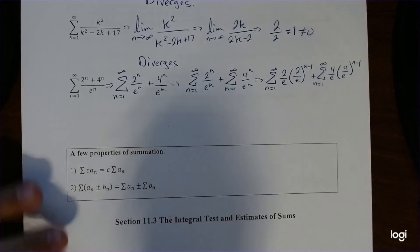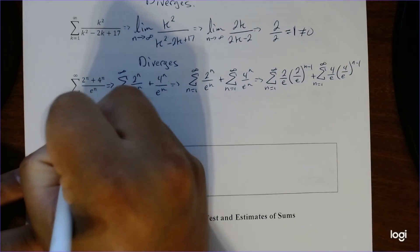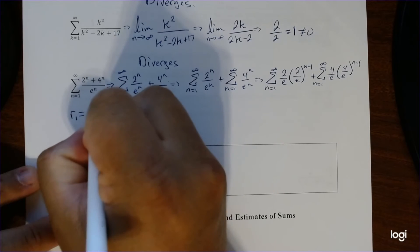And now we'll notice we have 2 geometric series. All right, so now we can just test it. So our first R amount, we'll call it R1. R1 is 2 over e.